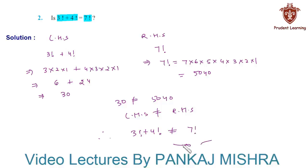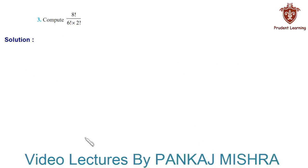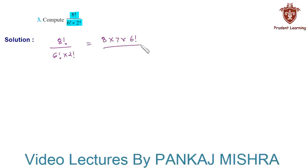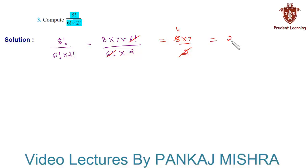This completes our solution. The next problem: compute 8! over (6! × 2!). We can write 8! as 8 × 7 × 6!, keeping 6! in the denominator, and 2! is simply 2. We can then cancel 6! from numerator and denominator, leaving 8 × 7 over 2, which gives 56 / 2 = 28.